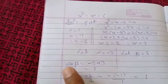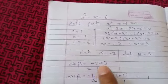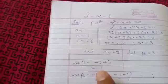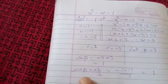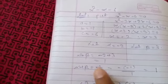Now, sum of zeros, that is alpha plus beta. So -2 + 3, which equals 1. We add these two values. Now we know that alpha plus beta equals -b/a.